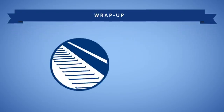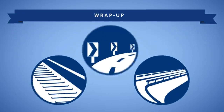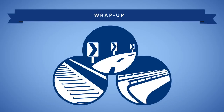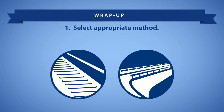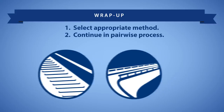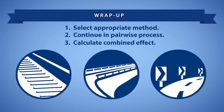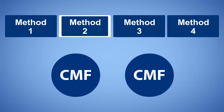This video focused on scenarios with two countermeasures. So what happens when there are three or more? In general, this increases the potential for overlapping effects. More research is needed to verify the accuracy of applying these methods to more than two countermeasures. However, if you wanted to adapt the general processes to analyze more than two countermeasures, you would select an appropriate method to estimate the combined effect of the two countermeasures with the smallest CMFs, producing a single combined effect. You would then continue a pairwise process, combining this estimate with the next smallest CMF.